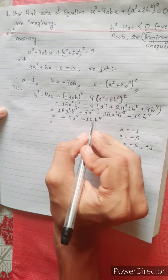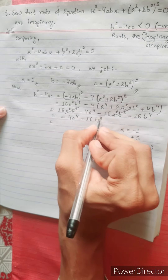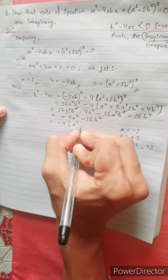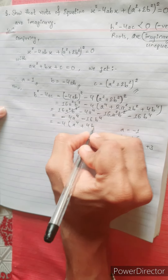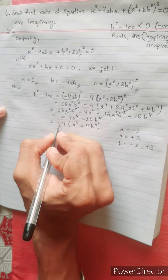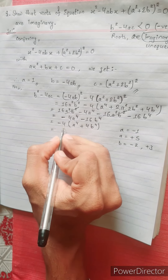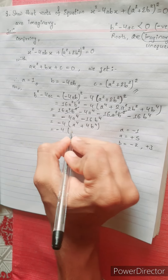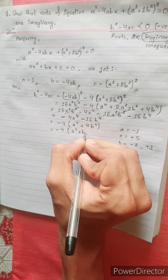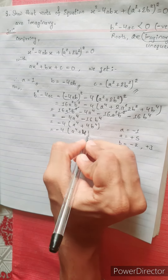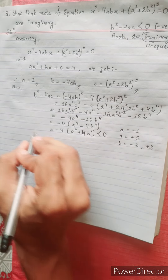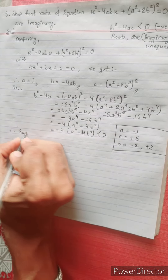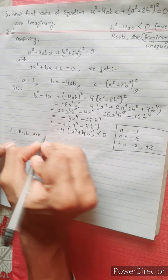The result is positive minus positive, which is negative. Taking minus 4 as common: minus 4 times (a to the power 4 plus 4b to the power 4). This is always less than 0. Therefore, the roots are imaginary.